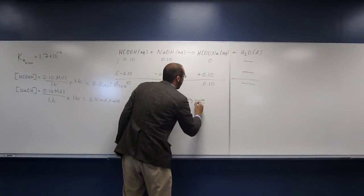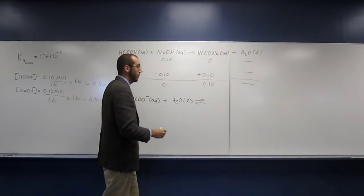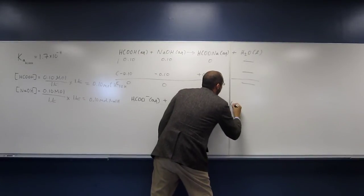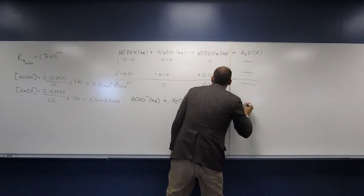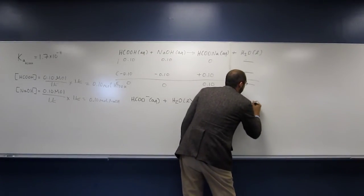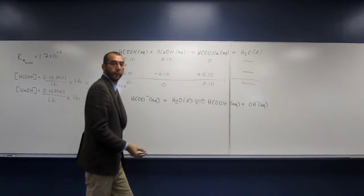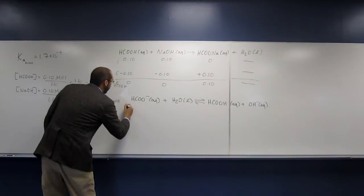So it's going to react with water, like that. And remember, this is a weak acid, weak base reaction, so it's going to be an equilibrium. So that's going to give us formic acid plus the hydroxide.